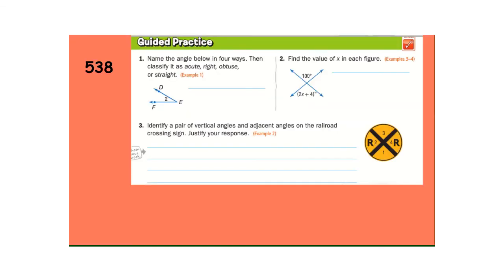Guided practice. Try those three. Pause the video. Name the angle in four ways. Then, classify it. So, you should have wrote DEF, FED, angle E, or angle 2. Those are the four names. Classify it. That is acute.